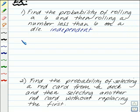So, we need to find the probability of rolling a 6. The probability of rolling a 6. Well, on a die, there's a total of 6 numbers. There happens to be only one 6. So, it's 1 out of 6 to roll a 6 on a die.